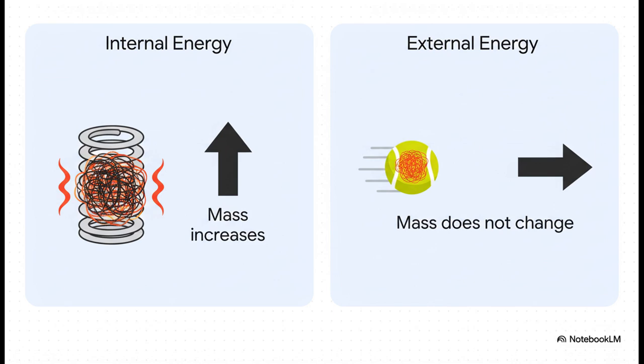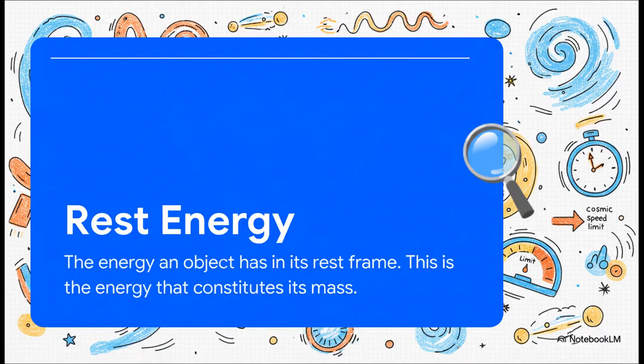But what about a tennis ball flying through the air? It's got kinetic energy, sure, but that's the energy of the whole thing moving. Nothing has changed inside the ball. So its mass stays exactly the same. And this idea has a name, a really important one. Rest energy. It is exactly what it sounds like. It's the energy something has when it's just sitting there at rest from your point of view. This internal, confined energy. That's what E equals mc squared is really all about. That energy is mass.